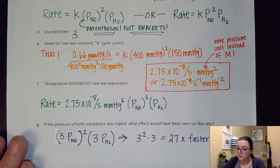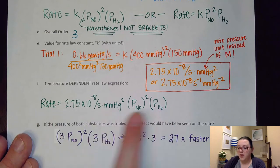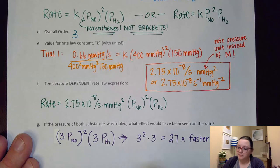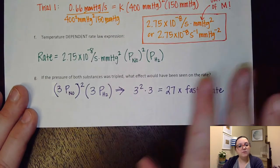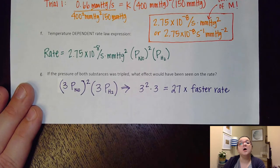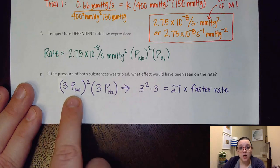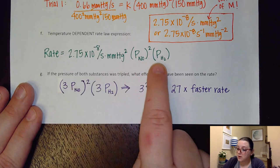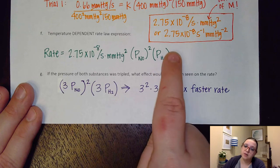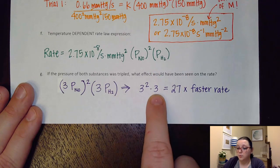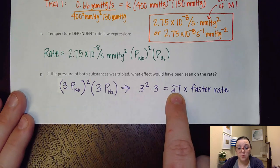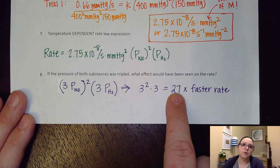And so then my temperature dependent rate law expression would be rewriting that with my K plugged in. And again, I use those parentheses with the variable of P there. Last but not least down here, it says, hey, if the pressure of both substances would triple, what effect would that have been on the rate? And so again, tripling the NO. NO is raised to an order of 2. So that would be 9 times faster. The pressure of the H2, if that's tripled, that's only raised to an order of 1. So that would only triple the rate. And so then I multiply those two effects together, which would get me that I would have a rate 27 times faster than the original rate that I had.